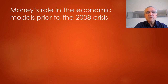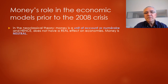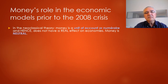First, let's take a look at the role of money in economic modeling. In the neoclassical theory, which is the dominant paradigm in economics today, money is a unit of account or a numeric veil, and hence it doesn't really have a real effect on the economy. This is the implication that the models have: money is neutral.